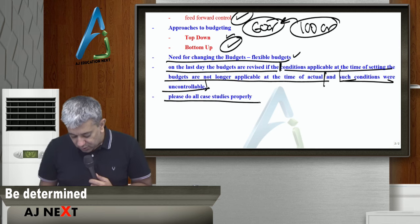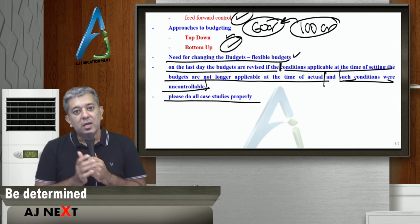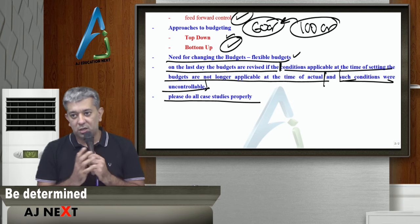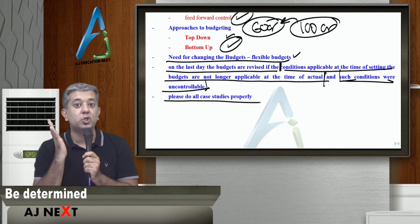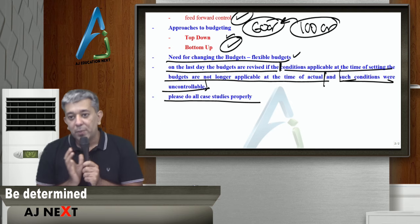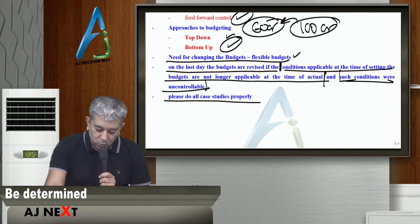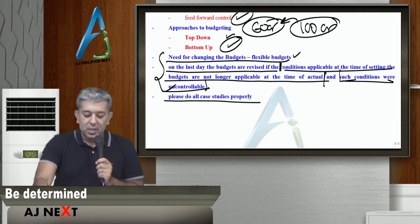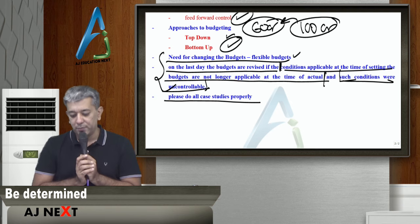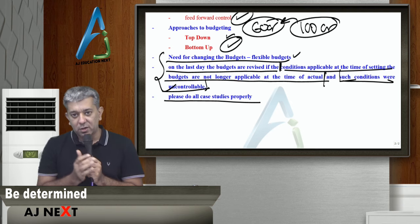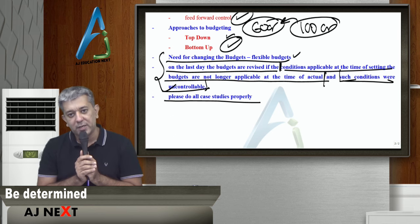Please study all the case studies for budgetary control thoroughly — especially the feedback system, feed-forward control system, and beyond budgeting, which is a slightly larger concept — properly from theory. In budgetary control, I mainly expect a case study type question or questions where budgets need to be revised on the last day. That is something important. Budgetary control is done. I'll see you all in the next lecture in the series of Super Quick Revision. Bye guys.